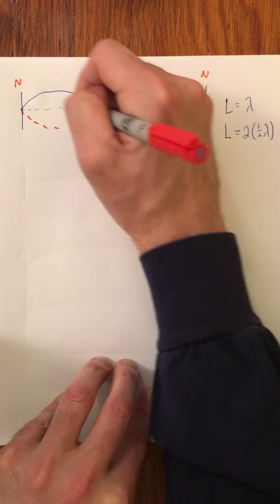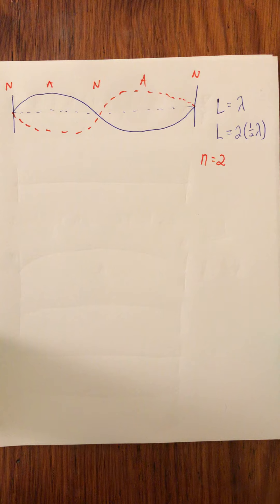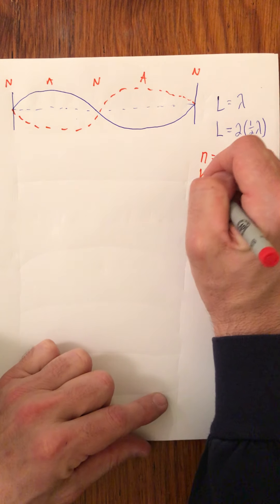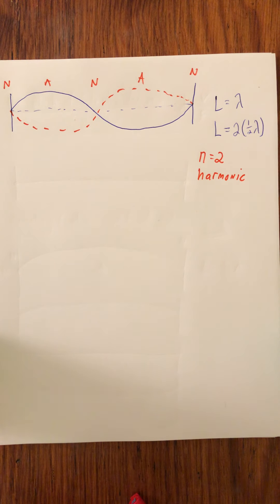And here you can see node, node, node, antinode, antinode. And this is the n equals two harmonic, or mode. And write that word harmonic. Because sometimes that n number is called the harmonic number.